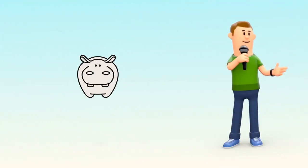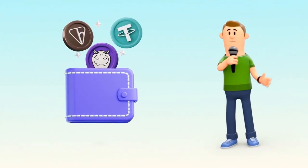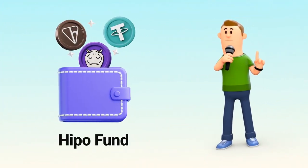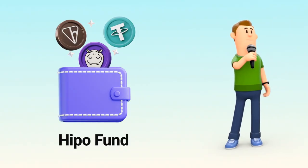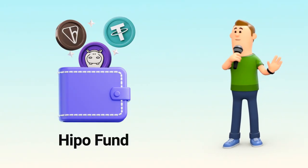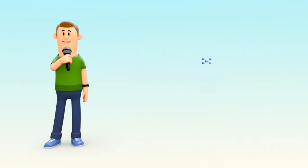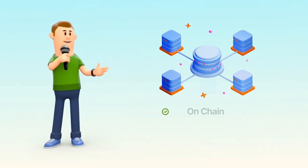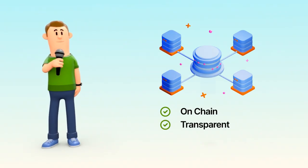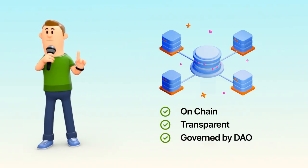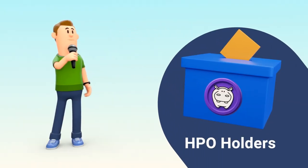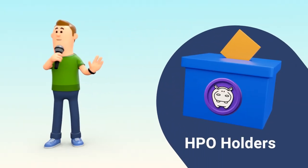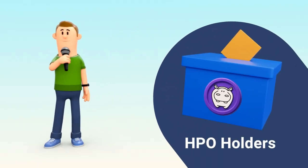In the HIPPO ecosystem, the DAT is truly community-owned. Every TON collected from HIPPO Club reward claims flows directly into the HIPPO fund — none to the team, none to operations. It's fully on-chain, fully transparent, and governed by the DAO. HPO holders will decide how this fund supports HIPPO's long-term value and future initiatives.